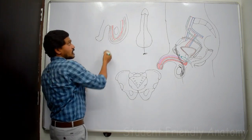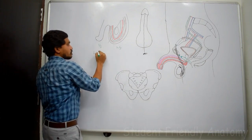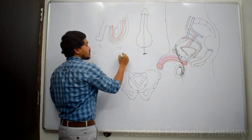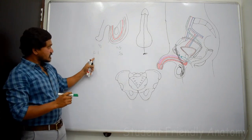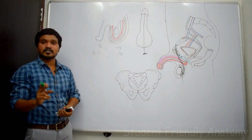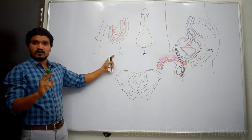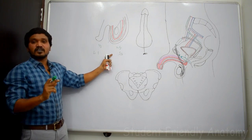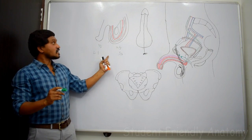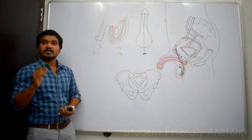Regarding nerve supply, the scrotal sac is divided into anterior one-third and posterior two-thirds. The anterior one-third is supplied by the L1 spinal segment — specifically the ilioinguinal nerve and the genital branch of the genitofemoral nerve. The posterior two-thirds are supplied by the S3 spinal segment — specifically the posterior scrotal nerve, which is a branch from the pudendal nerve, and the perineal branch of the posterior cutaneous nerve of the thigh. The area supplied by L1 and S3 segments is separated by a line called the ventral axial line.